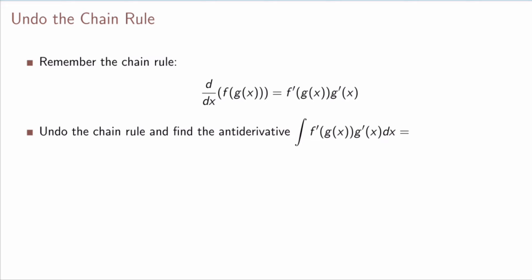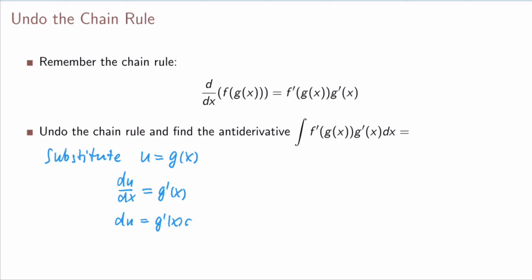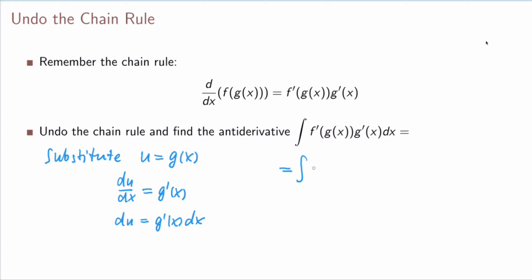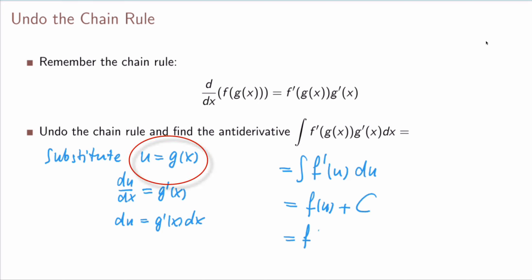For the general case, we substitute u = g(x), then differentiate: du/dx = g′(x), so du = g′(x) dx. Looking at the integral, the term g′(x) dx is exactly du. So ∫f′(g(x))·g′(x) dx becomes ∫f′(u) du. The antiderivative of f′ is f, giving f(u) + C. Substituting back, u = g(x), we get f(g(x)) + C — the reverse of the chain rule.